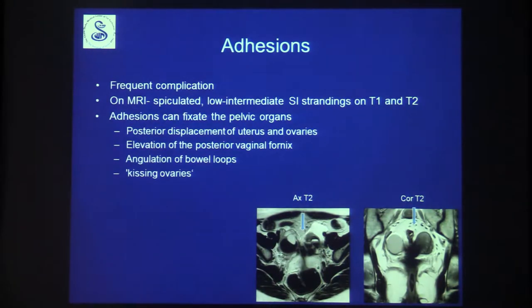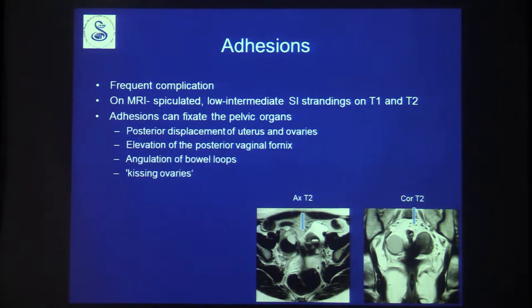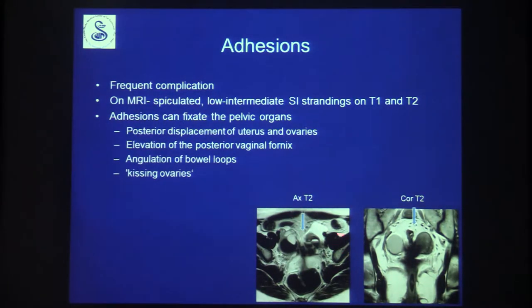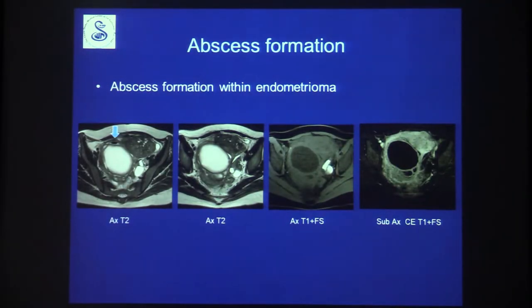Adhesions are a frequent complication, appearing on MRI as spiculated low-to-intermediate signal intensity strandings on both T1 and T2. They fixate pelvic organs, causing posterior displacement of the uterus and ovaries, elevation of the posterior fornix, angulation of bowel loops, and kissing ovaries. Two ovaries with endometriomas can be seen kissing together with adhesions. Another complication is abscess formation within an endometrioma, with gas visible inside on coronal images.